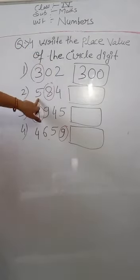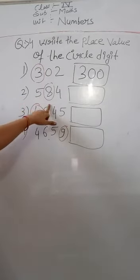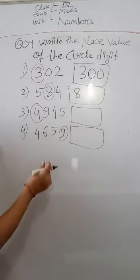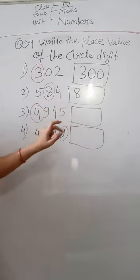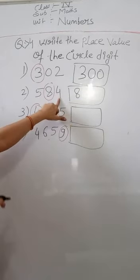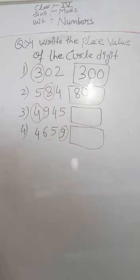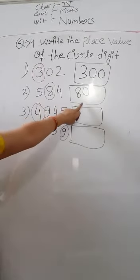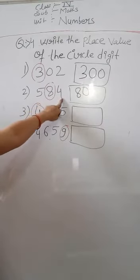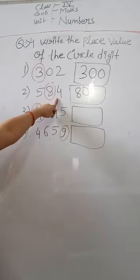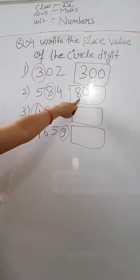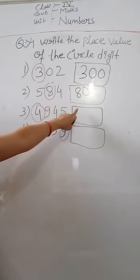The second: what is the place value of 8? We write 8 and then one zero — 80. Why only one zero? Because after 8 there is only one number, which is 4. So we write only one zero. So the place value of 8 is 80.